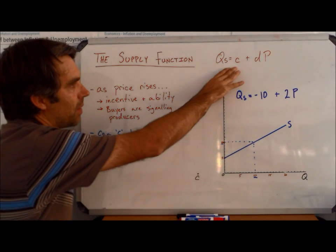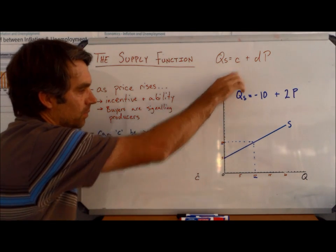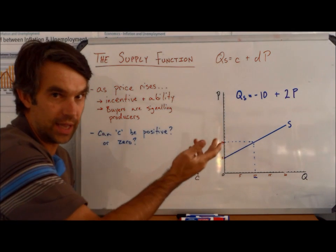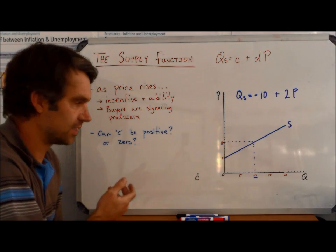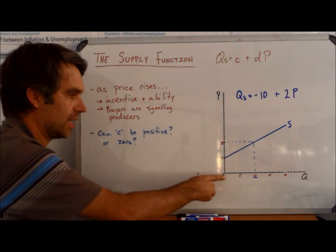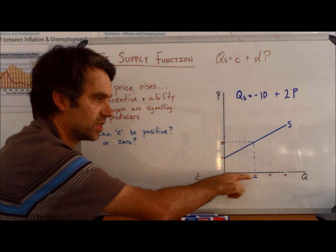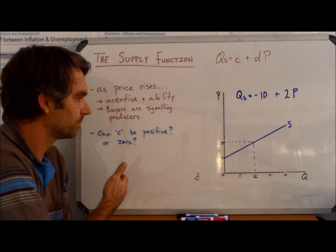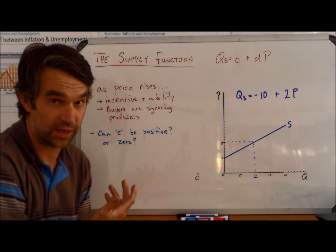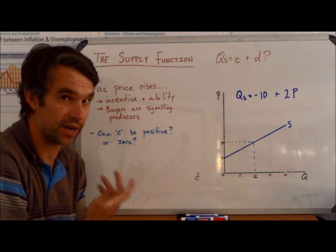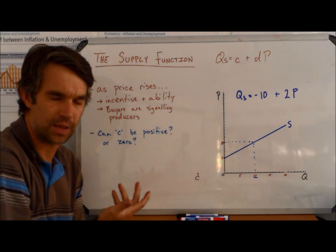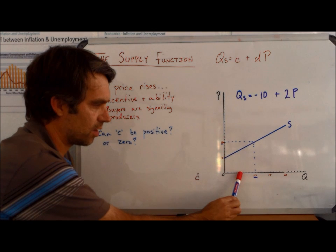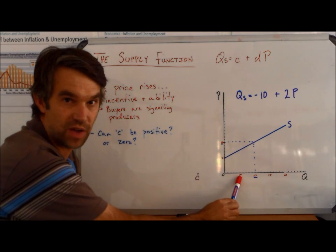Now, when we take it apart, again, the C variable, it's saying this is where supply would begin. The question is, can supply ever begin somewhere on the positive side of our Q or our X axis? Well, I think, theoretically, it would be pretty hard to justify that it could. Let's think about what that means. Let's think about what would happen if we had the supply curve starting here at positive 5.